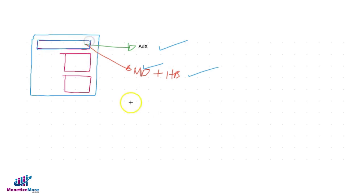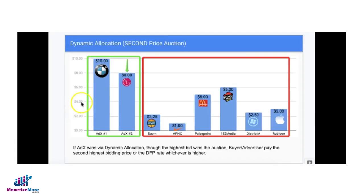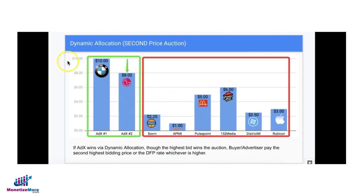Now how does that happen in a second price auction? Pretend these are the available bidders competing on that particular ad unit. If Ad Exchange wins, for example, the user visits the page, it triggers an ad request and sends it to all these bidders targeting the ad unit. We have Ad Exchange here with BMW as the advertiser willing to pay $10 for that particular ad request.